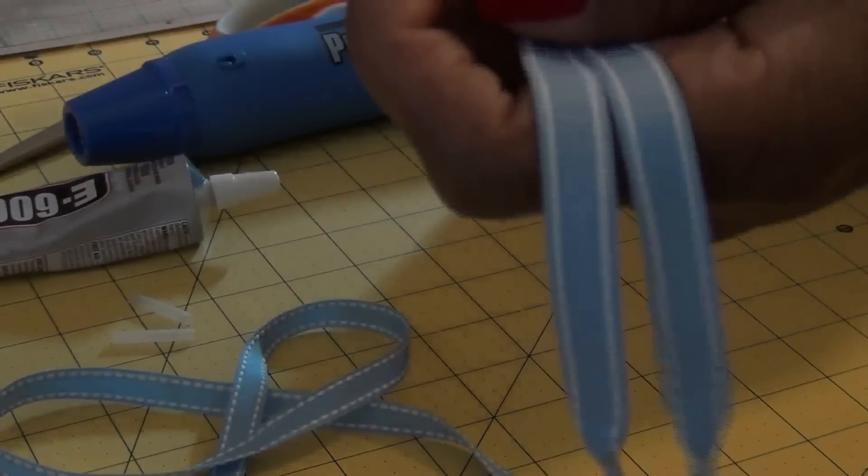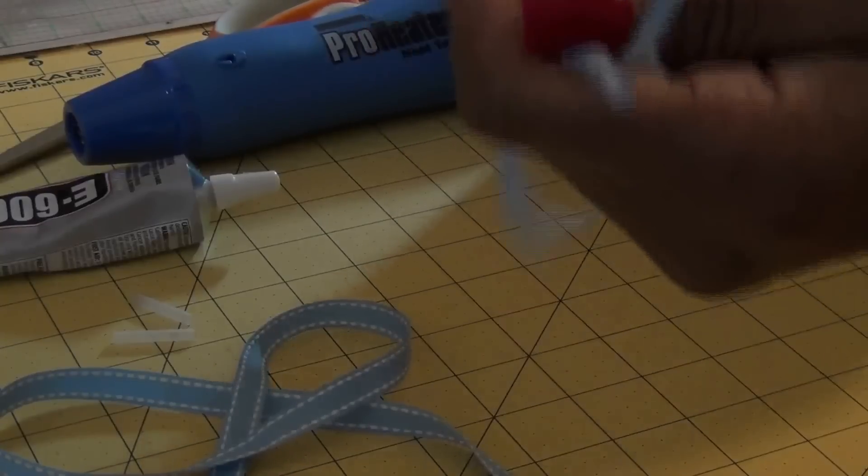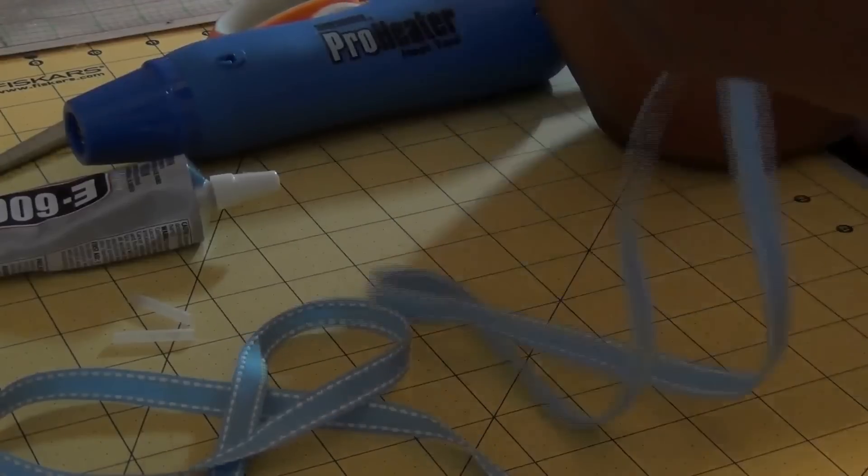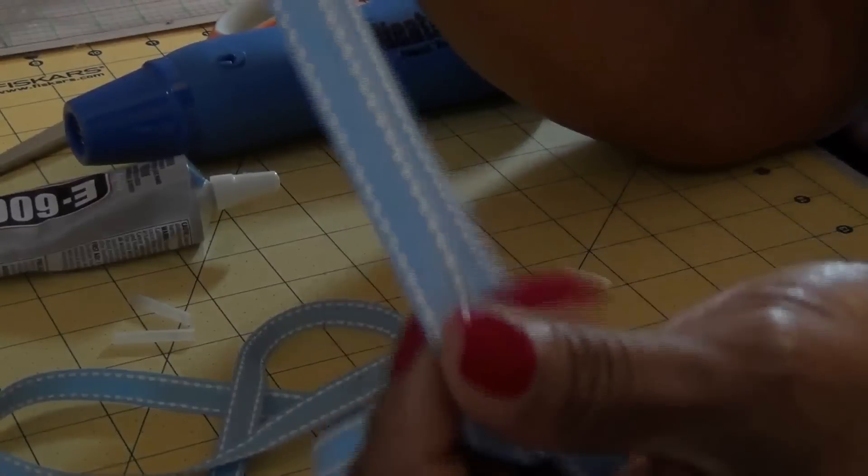These are shoelaces that you can make for yourself or for your American Girl doll. You can make them match your hair bows, especially when you do your surroundables which use 3/8 inch ribbon. You can make your laces to match that.